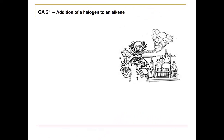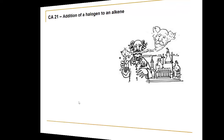In Chem Activity number 21 and the corresponding video, we'll be looking at the reaction of halogens with alkenes, or halogenation reactions, or pi bonds as nucleophiles where the electrophile is a halogen.